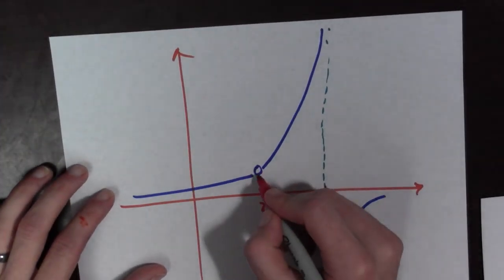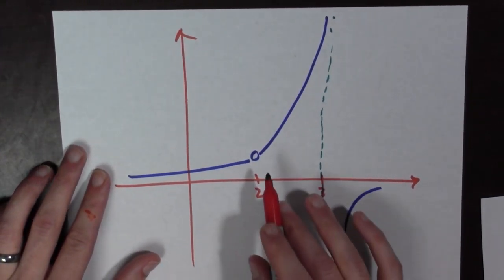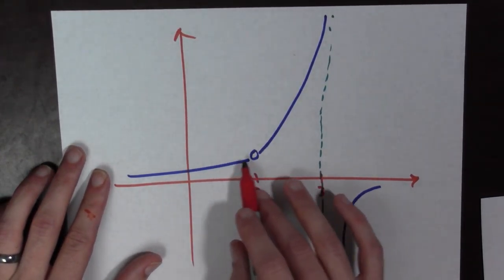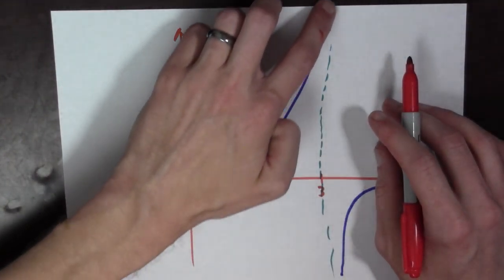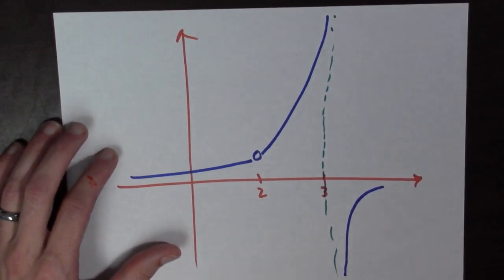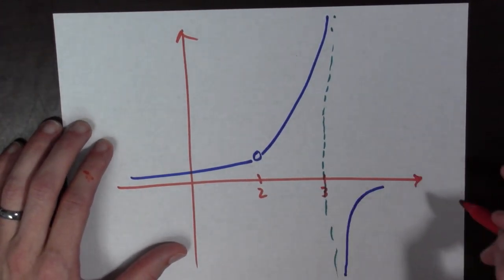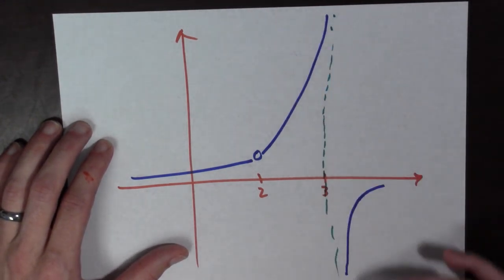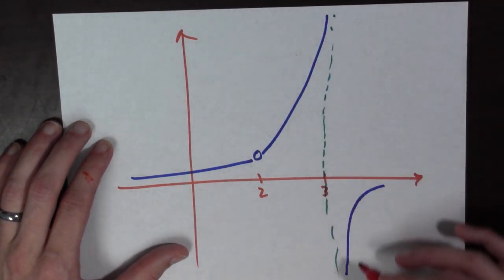Looking at the plot: as x goes to 2, there is a hole in the curve. As we approach 3 from the left, the curve approaches positive infinity, and as we approach 3 from the right, the function approaches negative infinity. Here is our vertical asymptote at x equals 3.